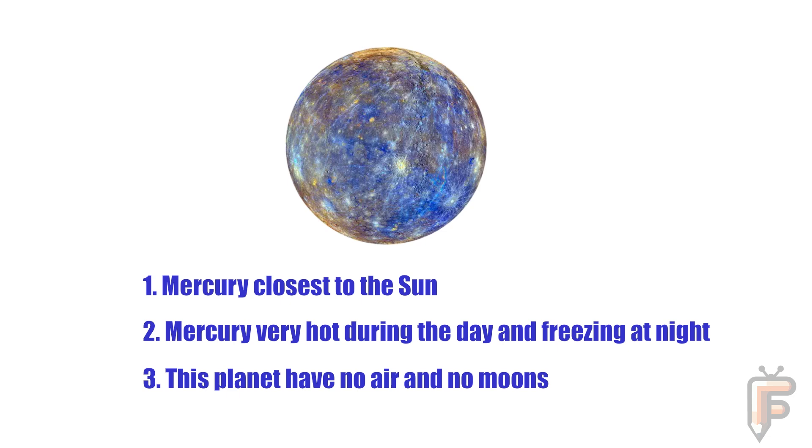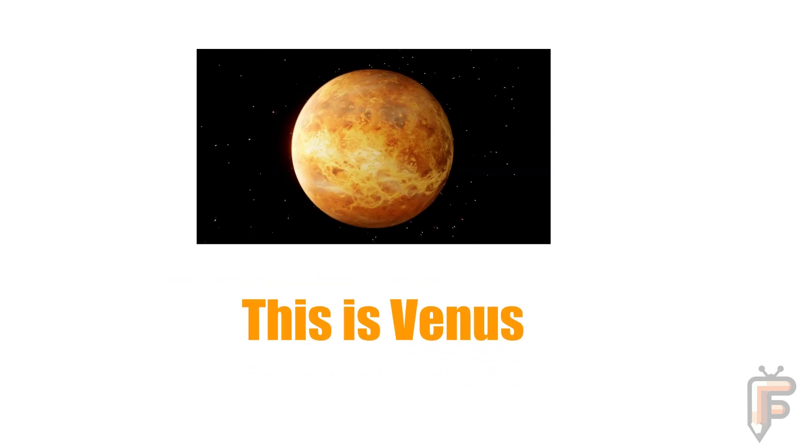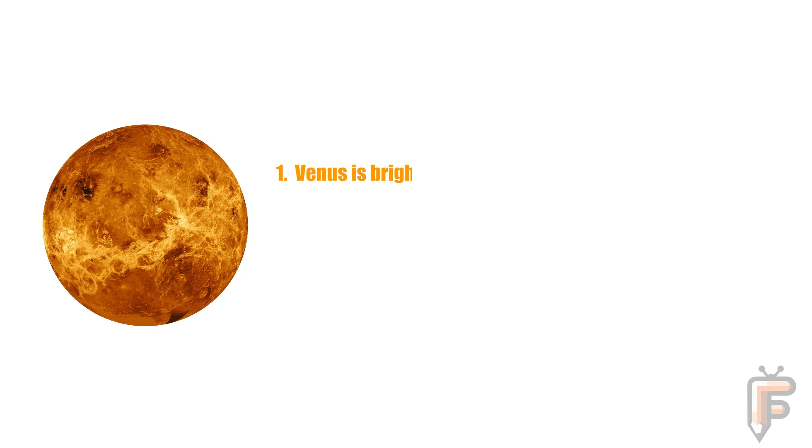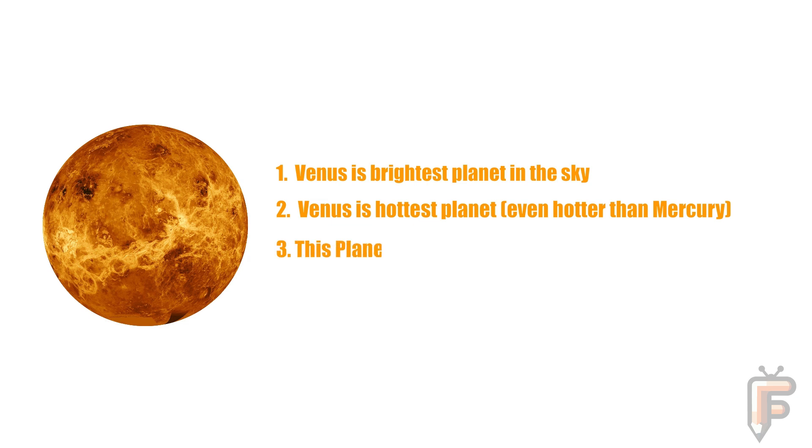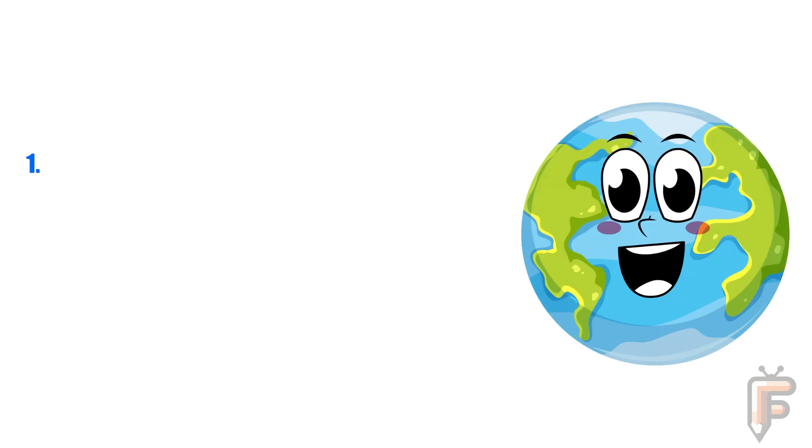This is Venus. Venus is the brightest planet in the sky. Venus is the hottest planet, even hotter than Mercury. This planet is covered in thick clouds of gas. This is Earth. Earth is our home planet. Earth is the third planet in our solar system. This is the only planet known to have life.